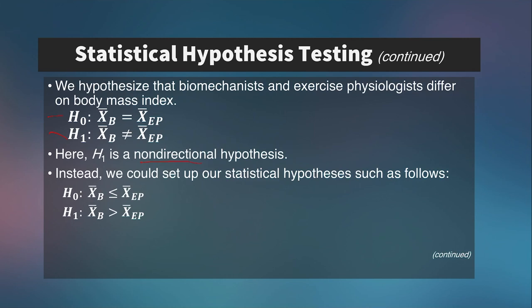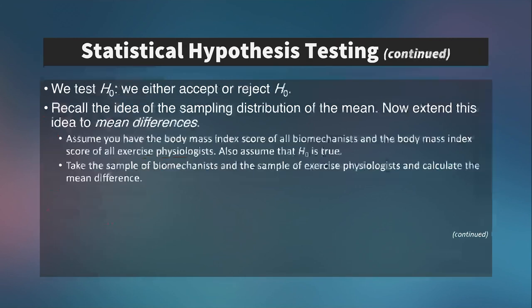We could also form a directional hypothesis. The null hypothesis might state that the mean body mass of biomechanists is less than or equal to that of exercise physiologists, and the alternative hypothesis would be that biomechanists have a greater mean body mass than exercise physiologists. We then proceed to test the null hypothesis and either accept or reject it. Inferential statistics all revolves around accepting or rejecting the null hypothesis at certain levels of confidence and probabilities of error.